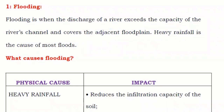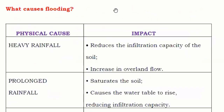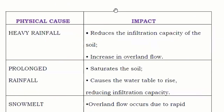Flooding occurs when the discharge of a river exceeds the capacity of the river's channel and covers adjacent areas — meaning the things near the river or flood plains. Heavy rainfall is the cause of most floods. Now, what causes flooding? There are different reasons; we'll see them one by one along with their impact.